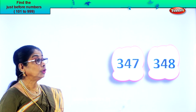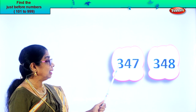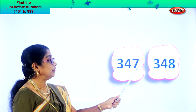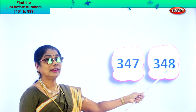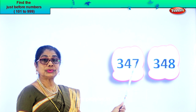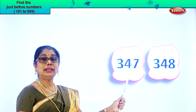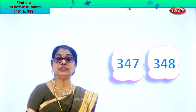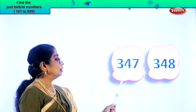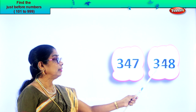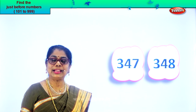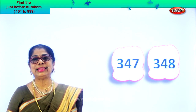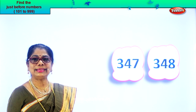After you find the number, you must say 347, 348. So this number comes before — when you read it, you should get it. 47, 48. Let's take another exercise.